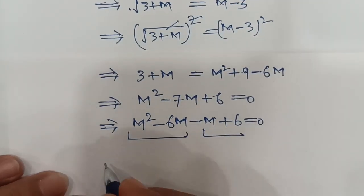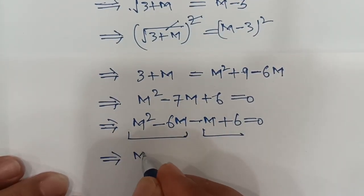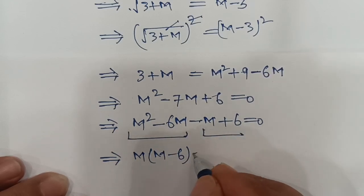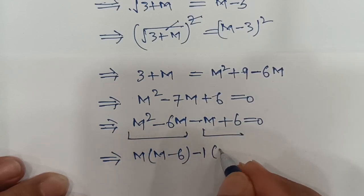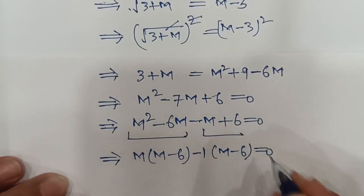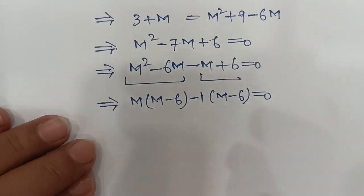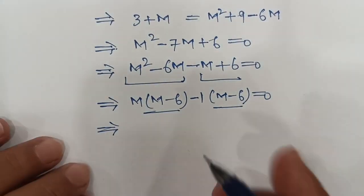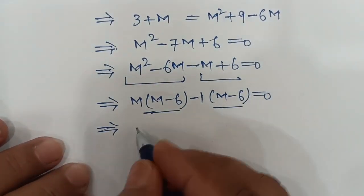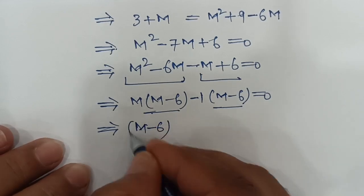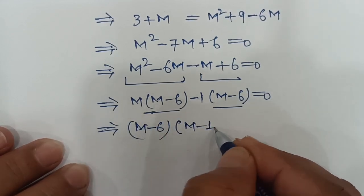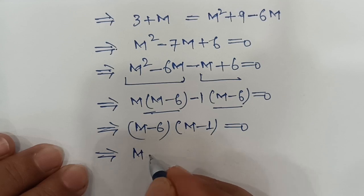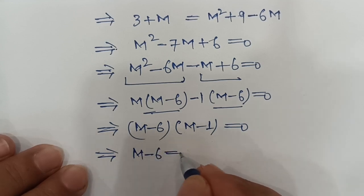We have the quadratic equation m squared minus 7m plus 6 equals 0. Solving by splitting the middle term: m squared minus 6m minus m plus 6 equals 0. Factoring in pairs, m(m minus 6) minus 1(m minus 6) equals 0, which gives (m minus 6)(m minus 1) equals 0.